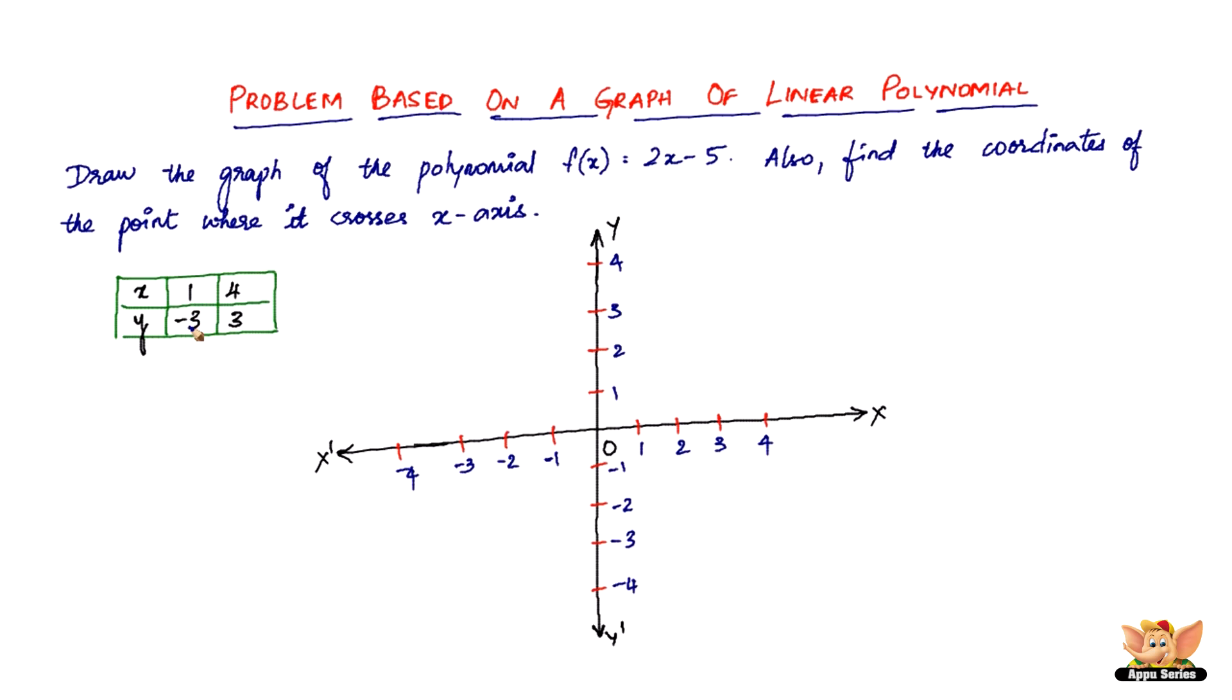So the first point is 1 comma -3. x is 1, y is -3. So here it is. The point is going to be here. The second point is x is 4 and y is 3. So 4 comma 3. So we get somewhere, it should be here. So this is what it is. So let us join this now. Let's join these points.